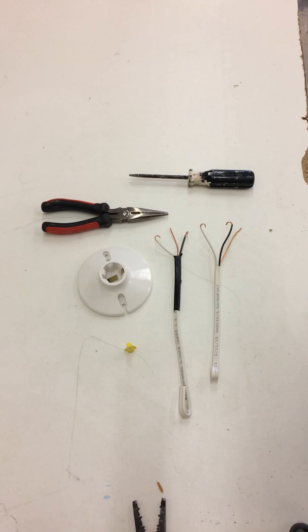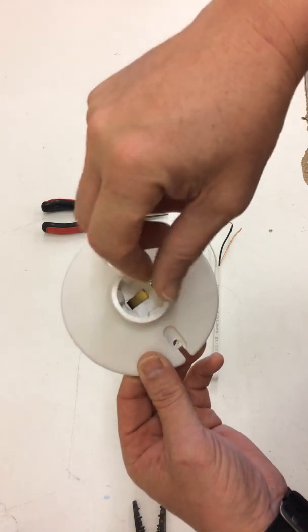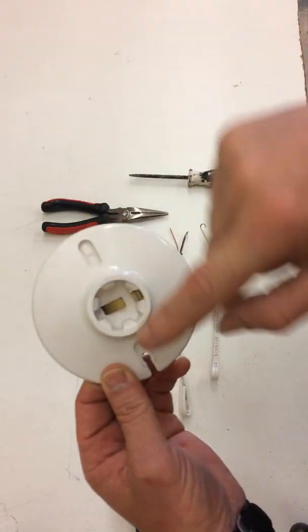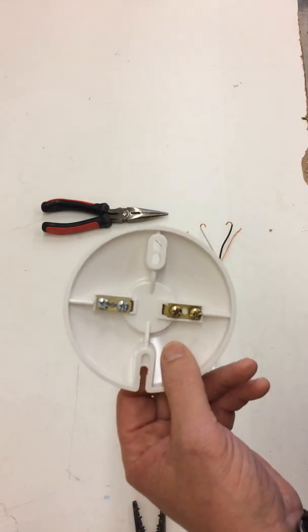Today we are wiring a basic light fixture. Basic light fixture has a place to screw in a bulb, two mounting screws, and on the back side has attachment for the terminals.